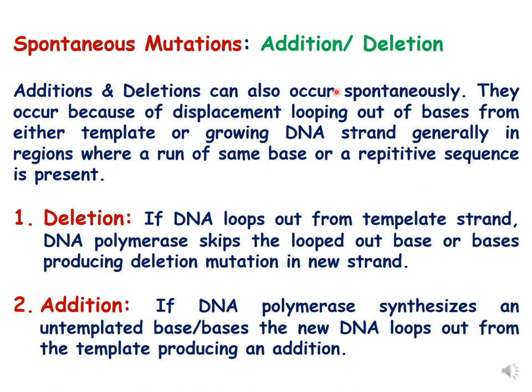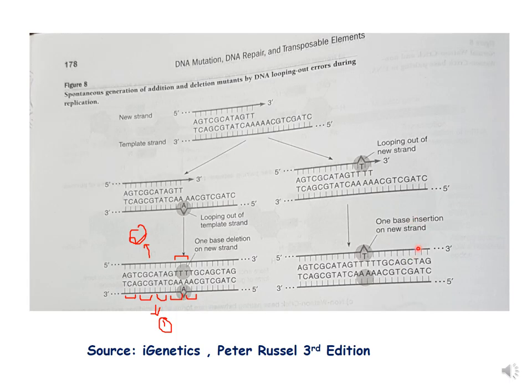Spontaneous mutation can also occur because of addition and deletion of a base. Additions and deletions occur spontaneously due to displacement looping out of bases from either the template or growing DNA strand, generally in regions where there is a run of the same base or repetitive sequences. When deletion happens, the DNA loops out from a template strand and DNA polymerase skips the looped-out bases, producing a deletion mutation in the new strand. In addition mutation, the DNA polymerase synthesizes an untemplated base in the new DNA, and the new DNA loops out from the template, producing an addition.